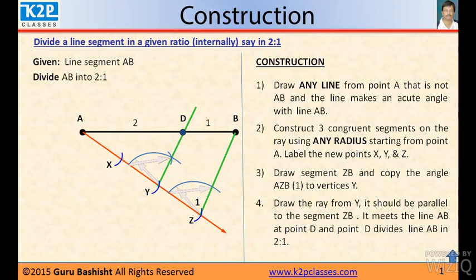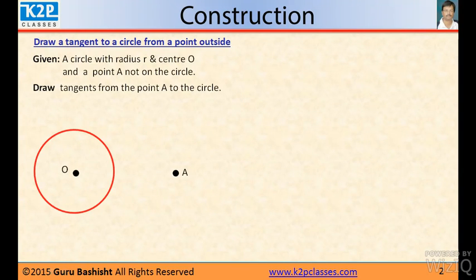Now, let us move to the second construction. Second construction is draw a tangent to a circle from a point outside. Given a circle with radius R and center O and a point A not on the circle, our objective is draw a tangent from the point A to the circle.